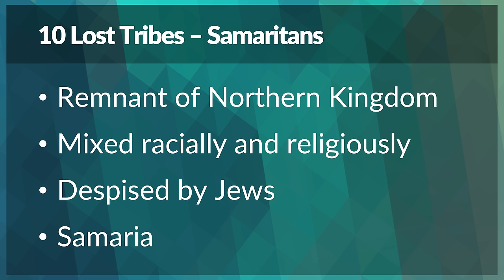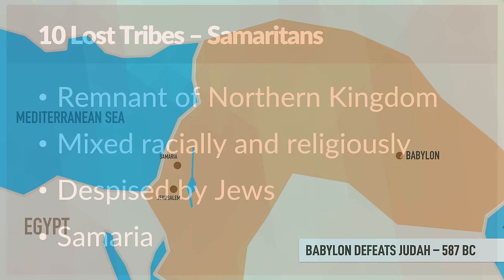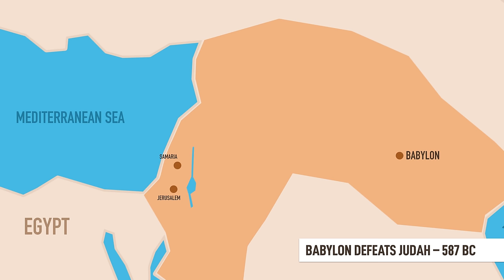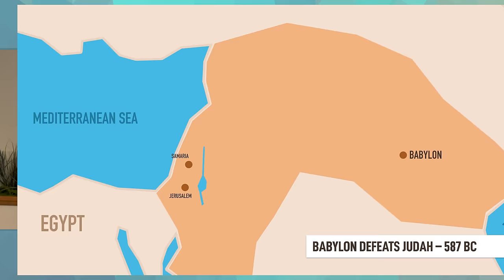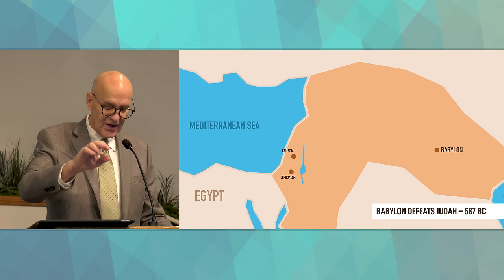The area of the Northern Kingdom was eventually repopulated by mixed-race Jews and referred to as Samaria. After its defeat in 587 BC — the Northern Kingdom defeated in 721 BC, the Southern Kingdom defeated in 587 BC — Nebuchadnezzar II of Babylon conquered the south.